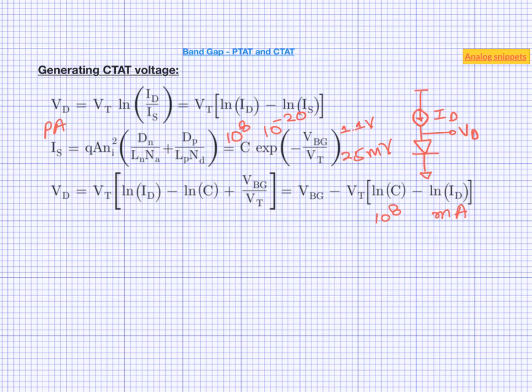Okay, so what is the slope of this CTAT voltage? And if we plug in these approximate values, then we arrive at approximately minus 2 millivolts per Kelvin, which matches rather well with our expectation.